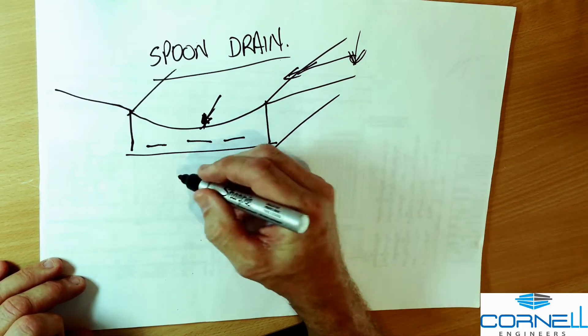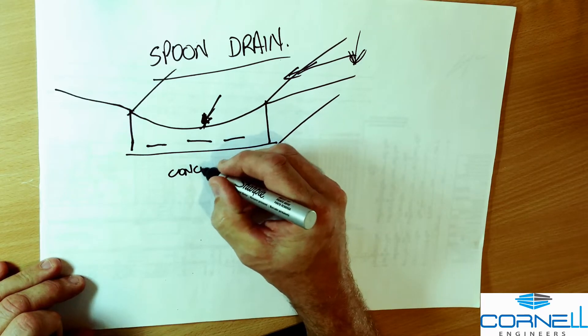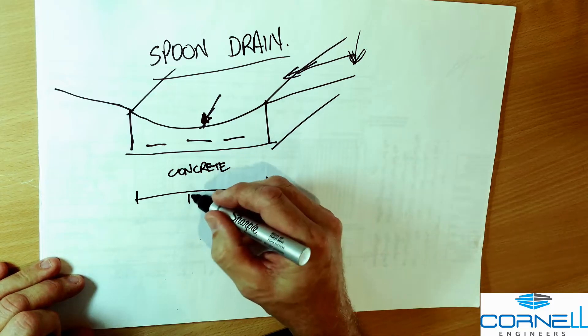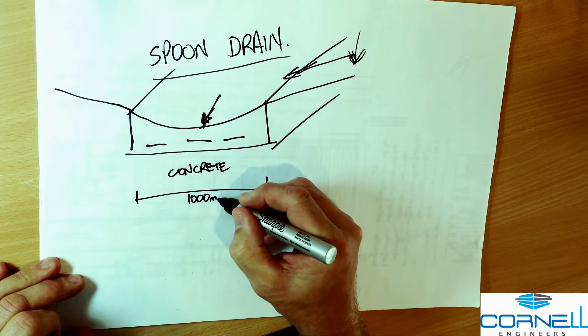So this is a concrete spoon drain. Its width when we specify it is about a meter wide.